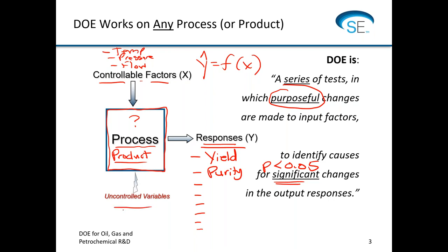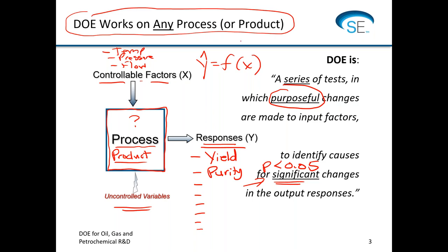There's always things that you don't control, and that's why we're going to use statistics to identify what's real and what was just caused by chance. These tools of design of experiments using proactive changes to your factors to see what happens to the responses should work for any process or product. It's just a challenge to work out the mechanics of how you can control things and how you can measure things.